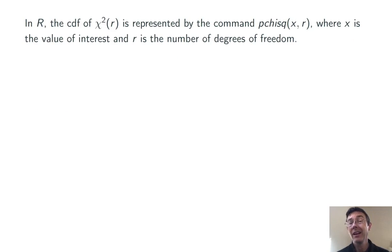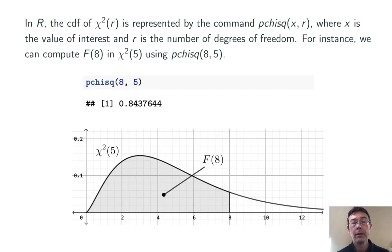In R, the CDF of χ²(r) is represented by the command pchisq(x, r), that is p-c-h-i-s-q, x comma r. Here x is the value of interest and r is the number of degrees of freedom. For instance, we can compute F(8) in χ²(5) using the command pchisq(8, 5). The result of that is 0.8437644. So to say this in words, about 84% of the area under that graph is shaded there in light gray. The probability of randomly getting a value from this distribution less than or equal to 8 is about 84%.